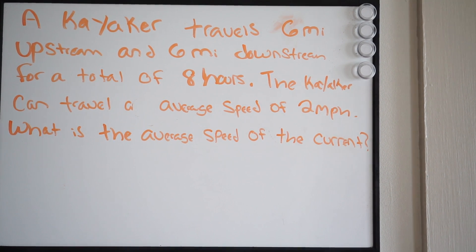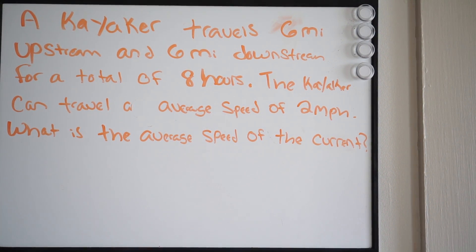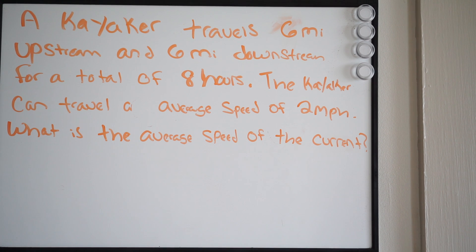Here we have another problem dealing with rational equations and we're dealing with a word problem. Let's go ahead and read the problem and then we'll go over how to set it up. A kayaker travels 6 miles upstream and then 6 miles downstream for a total of 8 hours. The kayaker can travel an average speed of 2 miles per hour. What is the average speed of the current?